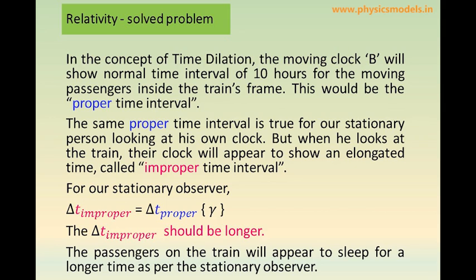But when the stationary person is looking at the moving train, for him, the passenger's sleeping time will appear to have got dilated — elongated, lengthened. So he will see that they are sleeping for a longer time than 10 hours. The delta T improper is that longer time, that improper time interval, and that's equal to the proper time interval multiplied by the ratio gamma.